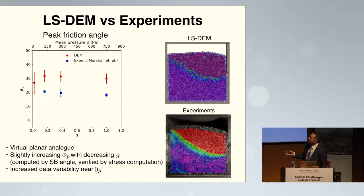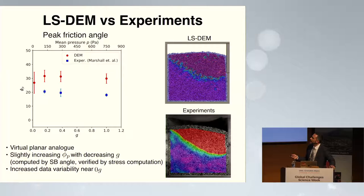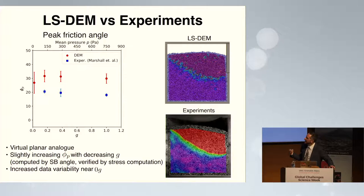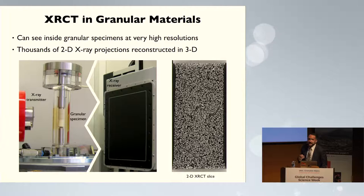I want to switch to the next topic that will connect with Grenoble. In the process of doing these experiments and trying to understand these materials, we've been building physics-based models that tell us how they behave. Here is a computational model of the experiment. These computational models are able to predict the experiment and follow the mechanical behavior extremely well. Experiments allow us to understand things, but models allow us to predict — and when trying to predict behavior, models are essential.